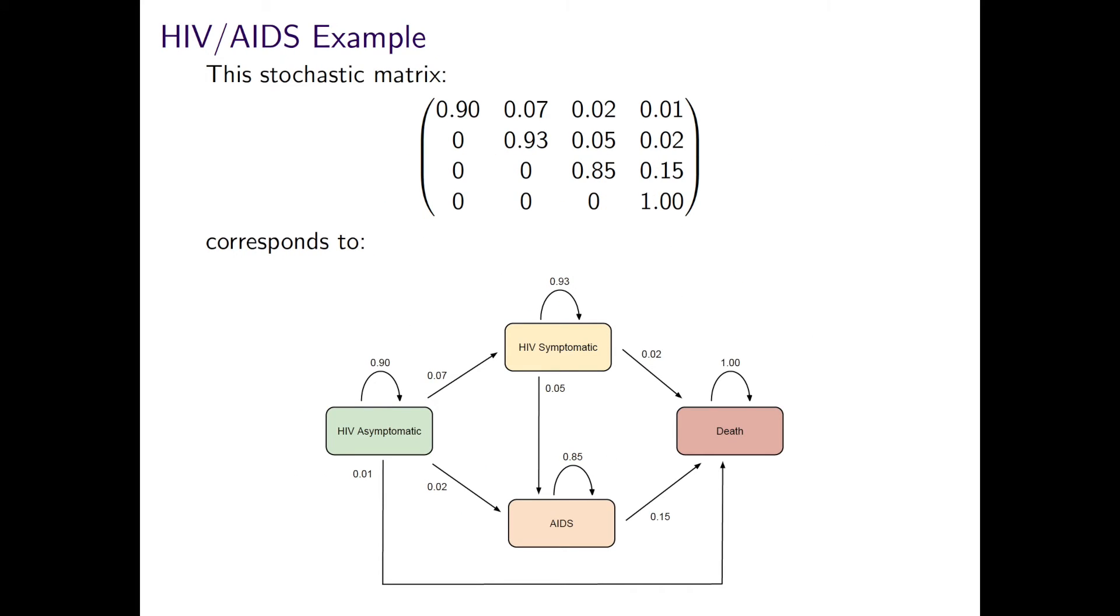So back to our HIV example, from data sources, expert opinion or published literature, we could populate the transition matrix. So for instance, if we had time steps of one year, after that year an asymptomatic patient has a 90% chance of still being asymptomatic, a 7% chance of being symptomatic, 2% chance of having AIDS, and a 1% chance of dying during that year.